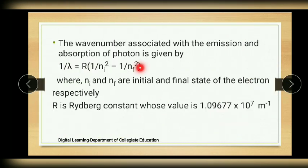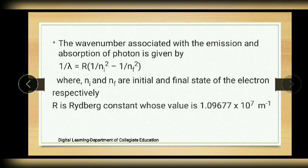The wave number associated with the emission and absorption of a photon is given by the Rydberg equation: 1/λ = R(1/ni² − 1/nf²), where ni and nf are the initial and final states of the electron respectively. R is the Rydberg constant and its value is 1.09677 × 10⁷ m⁻¹.